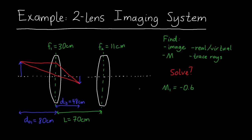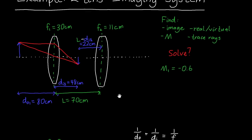To solve the full problem, we take the image from the first lens and use it as the object for the second lens. The only missing piece is the object distance for the second lens. You might think it's 70 plus 80 equals 150 centimeters, but we're using the first image as the object. So the object distance is L minus DI1, which is 70 minus 48 equals 22 centimeters.